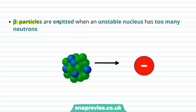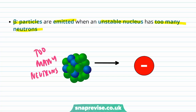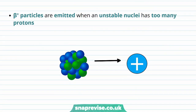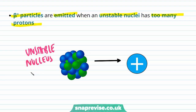Beta minus particles are emitted when an unstable nucleus has too many neutrons — so this nucleus here has too many neutrons and will emit a beta minus particle. Beta plus particles are emitted when an unstable nucleus has too many protons, and here we have an unstable nucleus with too many protons, which causes a beta plus particle to be emitted.